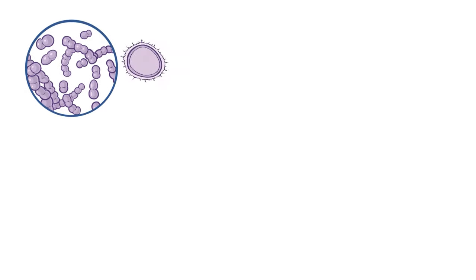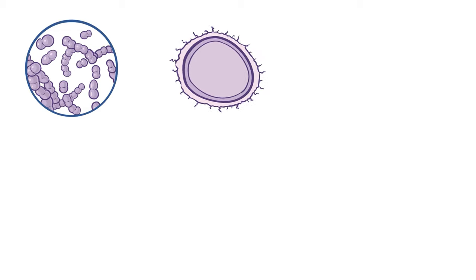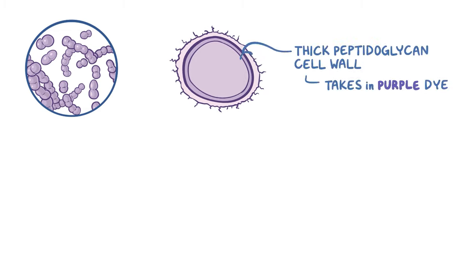A little bit of microbe anatomy and physiology. Strep pneumoniae has a thick peptidoglycan cell wall, which takes in purple dye when gram-stained. So this is a gram-positive bacteria.